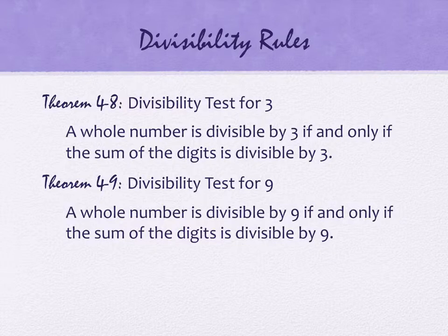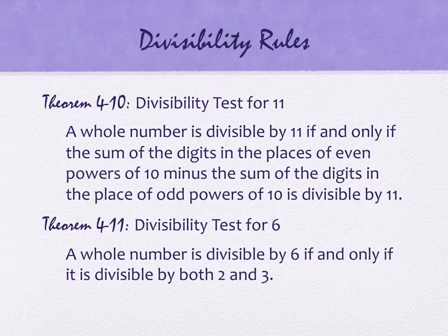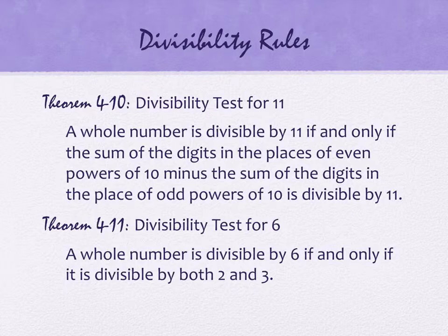The last two tests are unrelated and happen to fit on the same slide. The divisibility test for eleven looks strange in words but is easy in practice. It says: a whole number is divisible by eleven if and only if the sum of the digits in the places of even powers of ten minus the sum of the digits in the places of odd powers of ten is divisible by eleven.